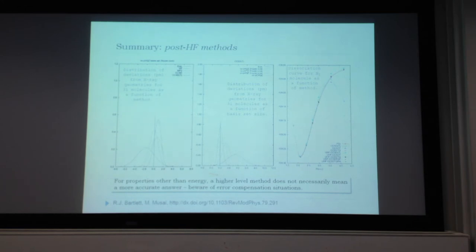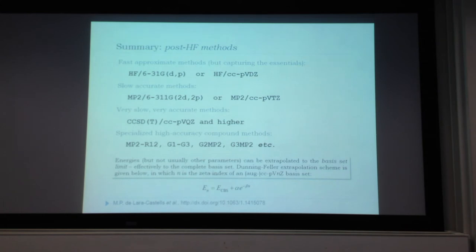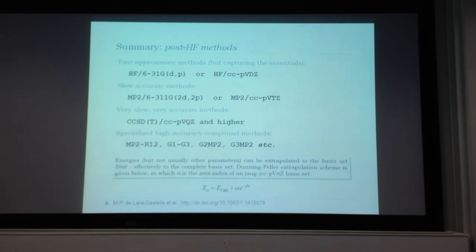For almost any given method and exchange-correlation functional, there is a paper running calculations against experimental data assessing performance. Summary for post-Hartree-Fock methods: for something fast and approximate, use Hartree-Fock; for accurate geometries or correlation corrections, use MP2; for extreme accuracy, use coupled cluster or composite methods. Composite methods like G1 to G3 perform calculations at many levels and combine results with empirically determined coefficients to cancel systematic errors.